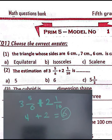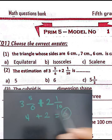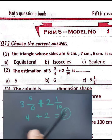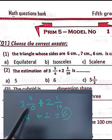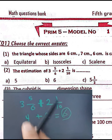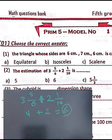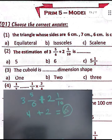The estimation of three and five-sixths plus two and one-tenth: three and five-sixths approximates to 4, and two and one-tenth approximates to 2. The sum of the two approximated numbers is 4 plus 2, which equals 6. So the estimated result is 6.